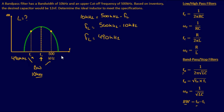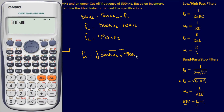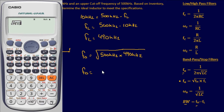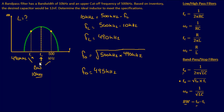With both cutoff frequencies known, we can find the center frequency using the equation: center frequency equals the square root of (high cutoff times low cutoff), which is the square root of 500 kilohertz times 490 kilohertz. Plugging into the calculator gives approximately 495 kilohertz for the center frequency.